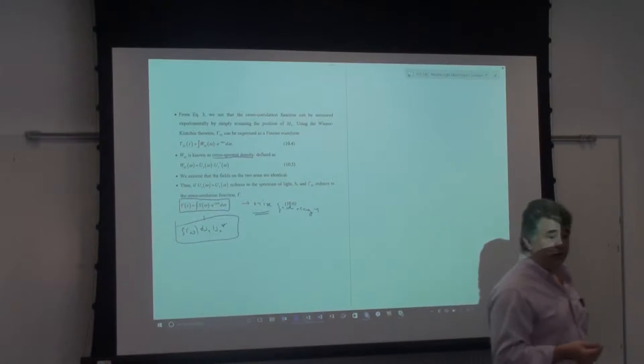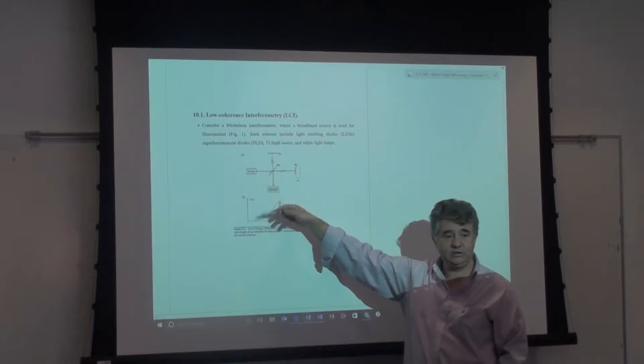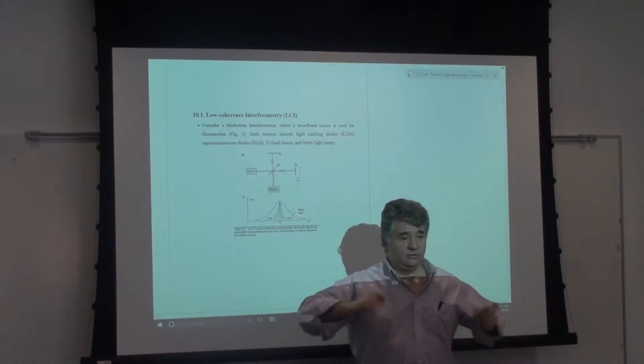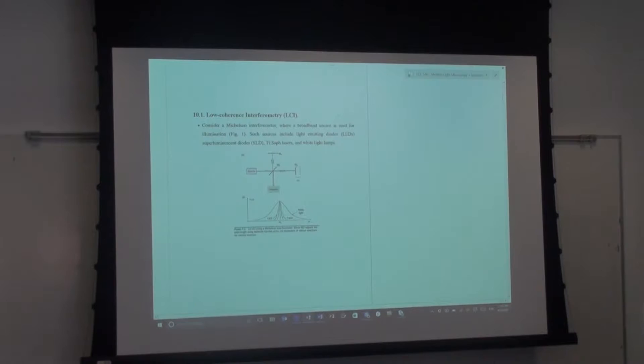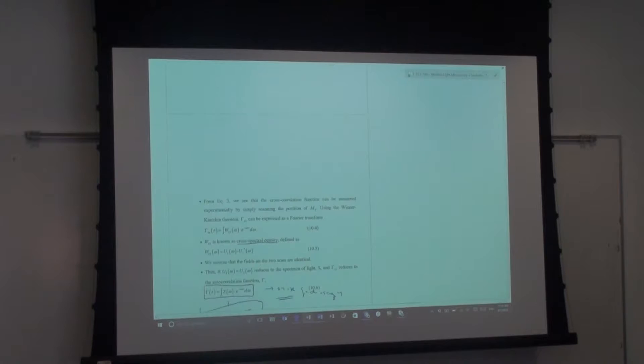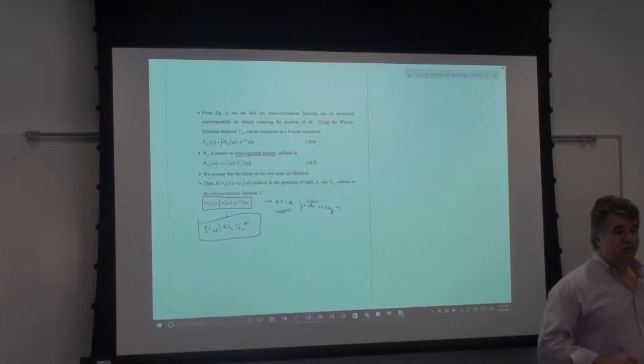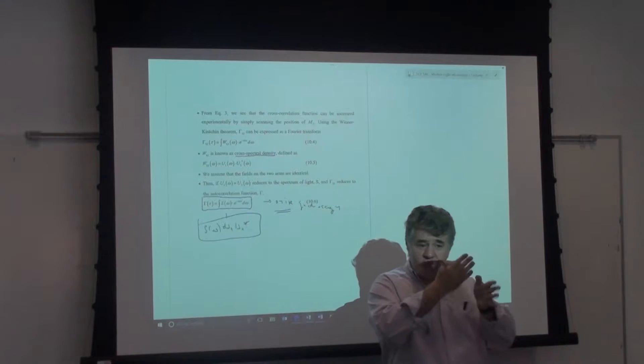OCT does essentially the reverse of FTIR. One version called frequency-domain OCT measures in the spectral domain with a grating and spectrometer, recovers the autocorrelation Γ, and converts that to depth because τ is proportional to z. What you measure at the detector as you scan the mirror is a signal with an oscillation — fringes with an envelope — and numerically transforming it gives the spectrum.